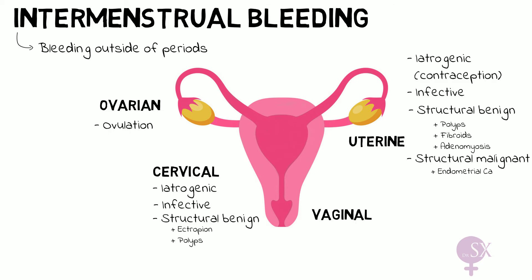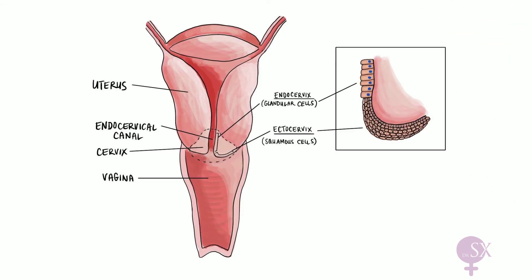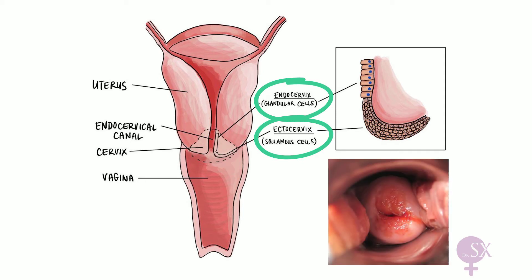Before we move on, what is a cervical ectropion? Let's have a quick recap on the histology of the cervix. As we can see from the image, the endocervix is lined by columnar epithelium, while the ectocervix is lined by squamous epithelium, and where these meet is called the squamous columnar junction. During pregnancy and puberty, the high levels of estrogen cause the cervix to grow and the columnar epithelium to be exposed. This is visible as a red area around the os on the surface of the cervix — our cervical ectropion, as you can see in the picture. This epithelium is more prone to bleed, so these patients may present with intermenstrual bleeding.